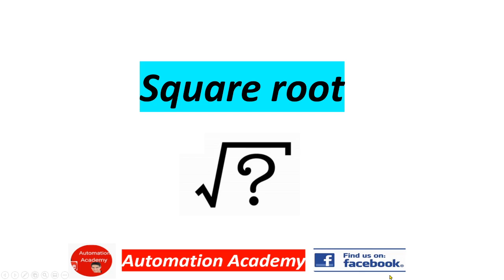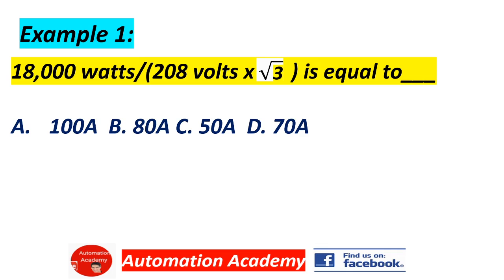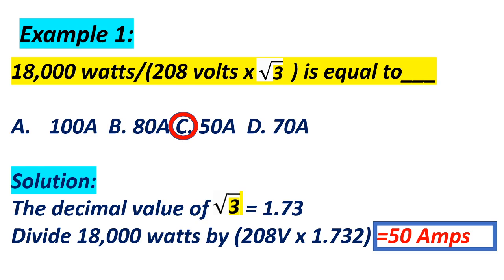Our next topic is square root. A square root is a number which produces a specified quantity when multiplied by itself — for example, 7 is the square root of 49, and the square root of 25 is 5. Example 1: 18,000 watts divided by 208 volts times the square root of 3. The decimal value of √3 is 1.73. So 18,000 ÷ (208 × 1.73) equals 50 amperes. Answer: C, 50 amperes.